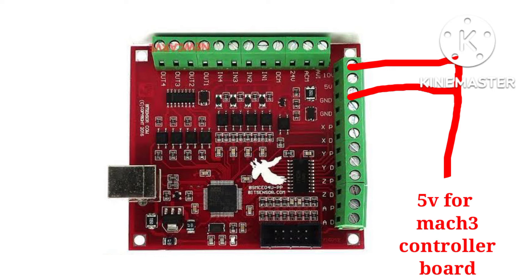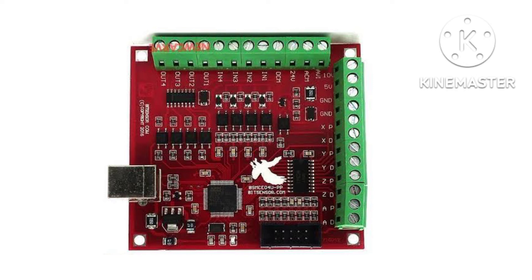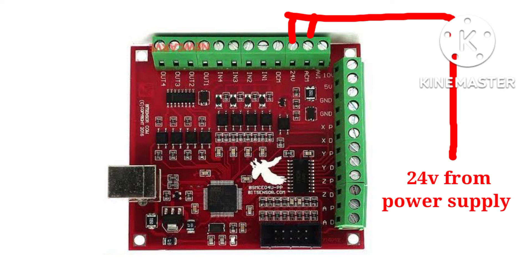We give 5 volts to this CNC Mach 3 board because the requirement of this board is 5 volts. There are also two ports for 24 volt DC. These 24 volts are used for the relays and other accessories. These two ports connect to a 24-volt power supply.